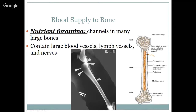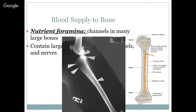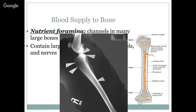There is one big blood supply to the bone that supplies all of the Haversian systems, the Volkmann's canals, and the bone marrow. That's called the nutrient foramen — a channel in large bones that we can actually see in the femur as an area of radiolucency, meaning it's not completely made up of bone. This foramen or opening contains large blood vessels, lymph vessels, and nerves. We want to be very careful when we see this not to call it a fracture; it is actually a nutrient foramen, and you can see it passing through the cortex and into the bone.